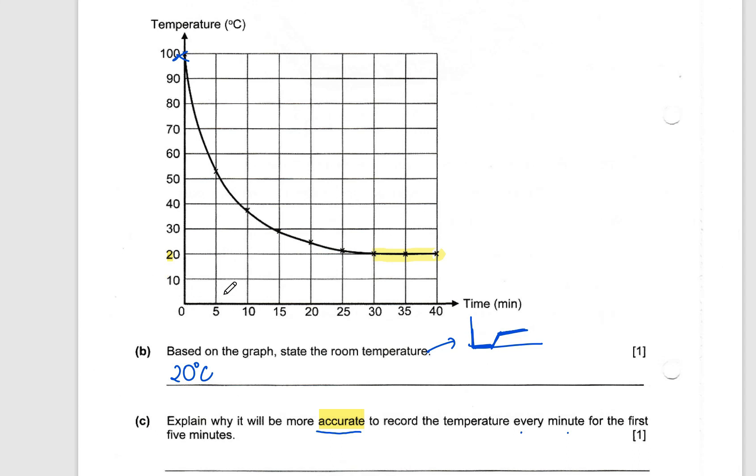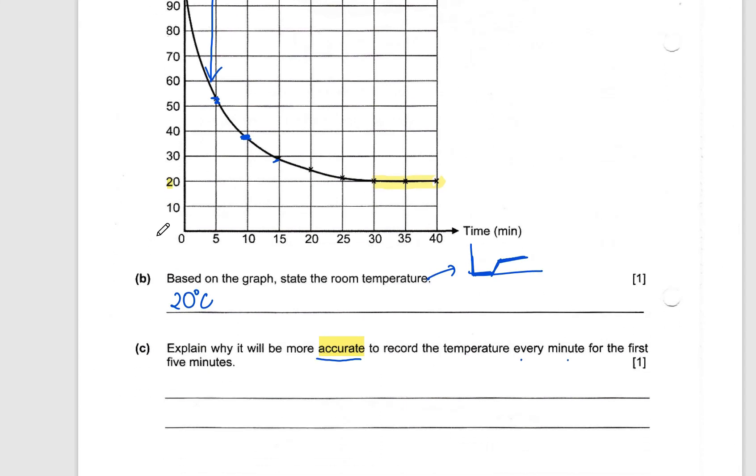So if you look at 0 to 5, versus any point of the graph here, from 0 to 5, it drops from 100 to around 50. So that's a very huge drop. From 5 to 10, it only drops about 10. Then from here to here, it's also about 10 and then slowly and so forth. But the biggest drop happens in the first five minutes. So why is it more accurate? Because the drop in temperature or the decrease in temperature is the largest in the first five minutes.